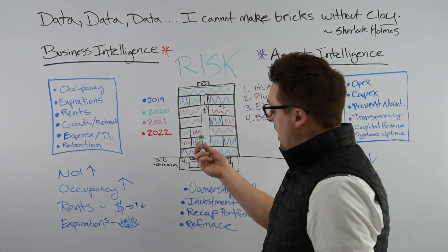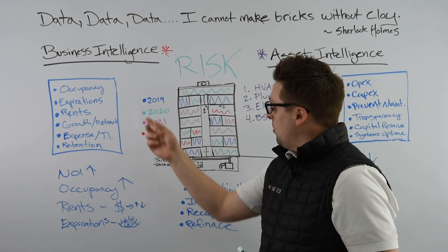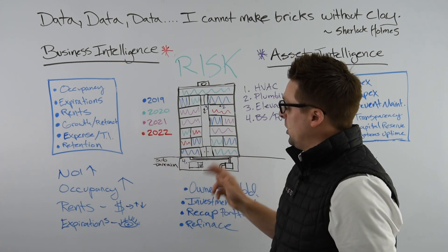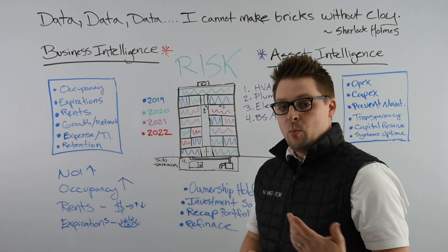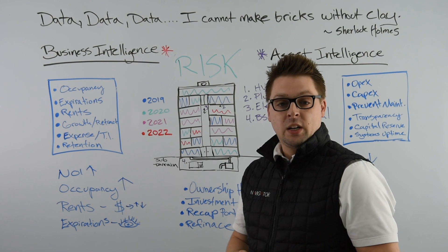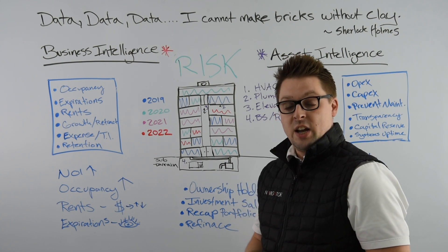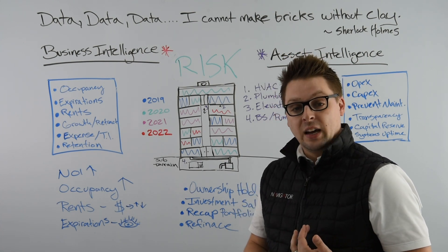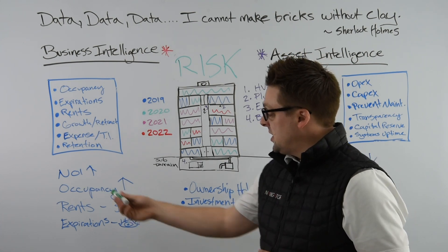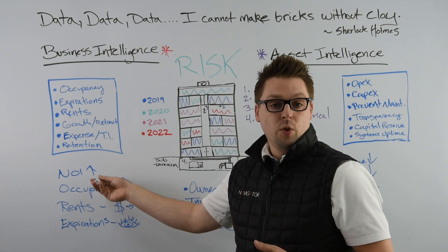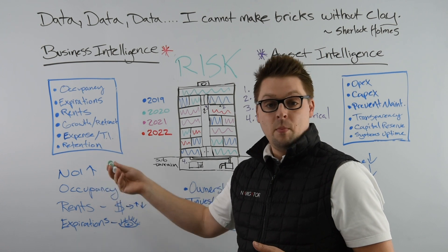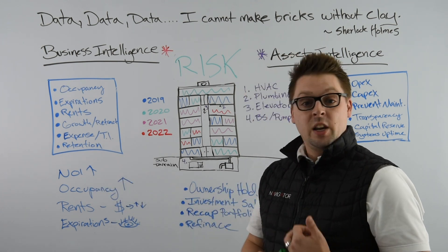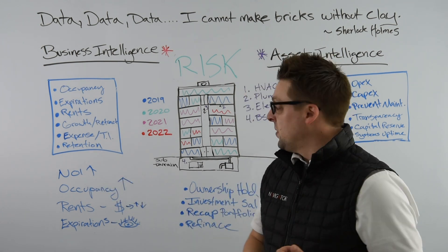Right here I have a building showing basically a stacking plan, color-coded by year of expiration. It's very important from a data perspective as an owner to understand when your rolling expirations are happening in a building. This actually dictates your year-over-year and month-over-month NOI, because it costs money to re-tenant a building.